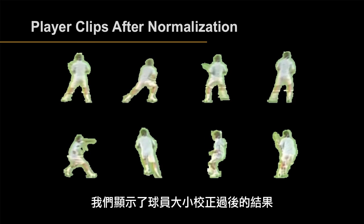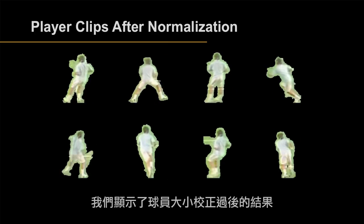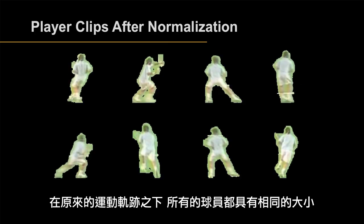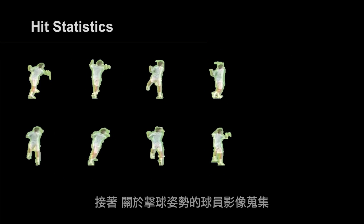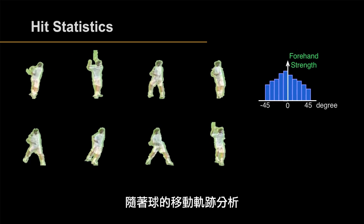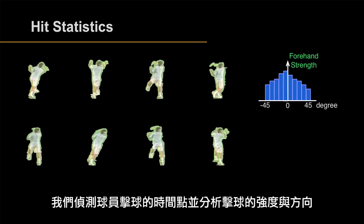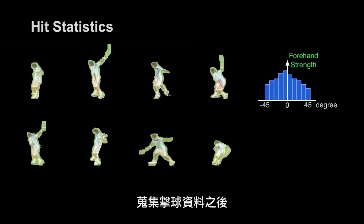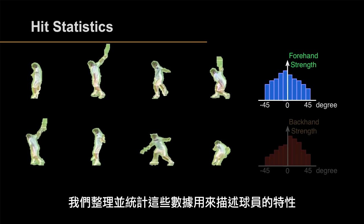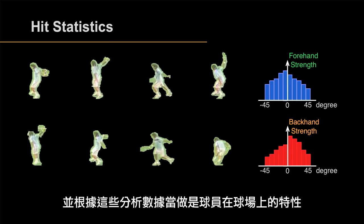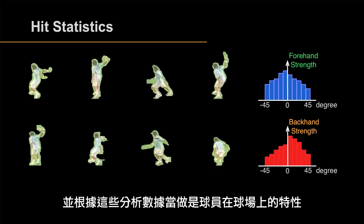Here we show the normalization results. All the players have the same size and move in real motion trajectories. Then we move on to the hitting postures. With the analysis of ball trajectories, we detect when the player hits the ball and analyze the strength and direction of every hit. After gathering hitting data, we generate a statistics report of the player's characteristics, which serves as important information for further rendering.